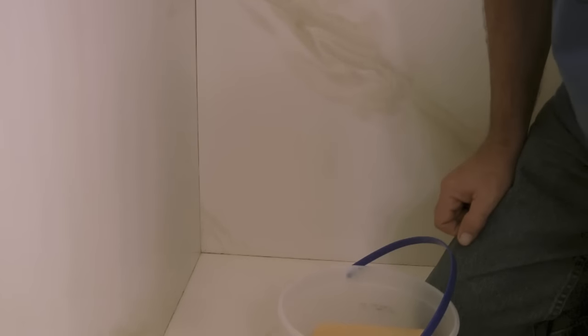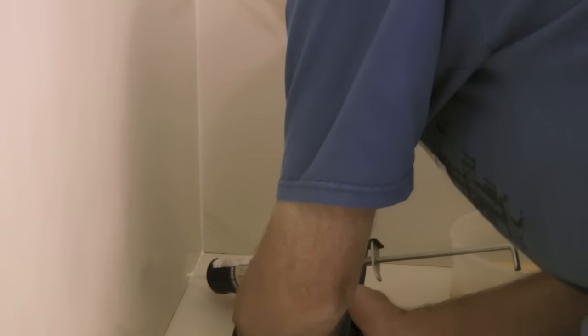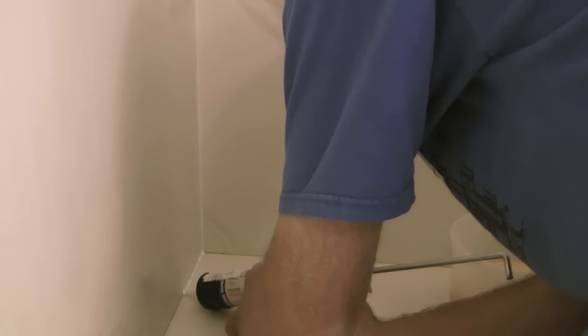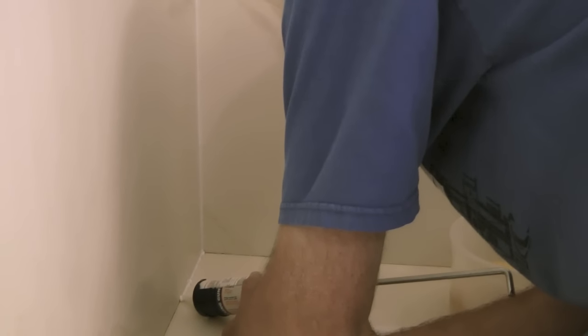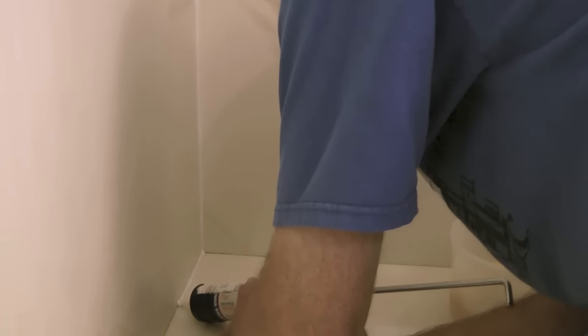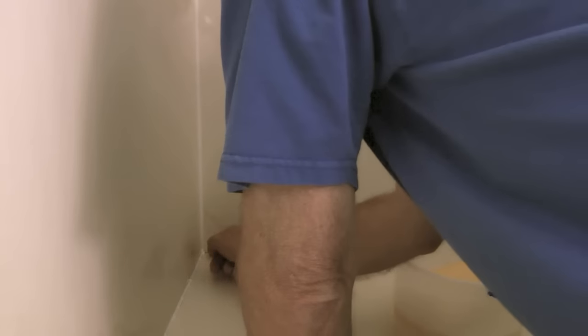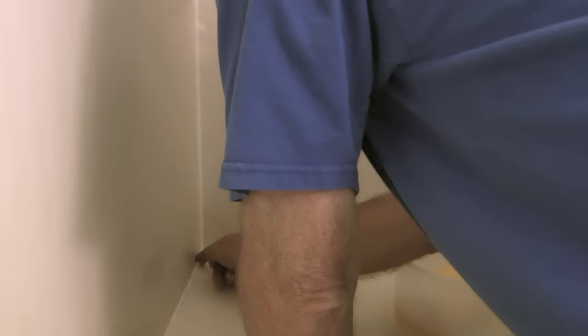Then I will take the caulking gun and apply a small bead of caulk in the gap between the shower wall and the shower floor. Then I will dip my finger in the warm water and smooth out the shower caulk that I just applied.